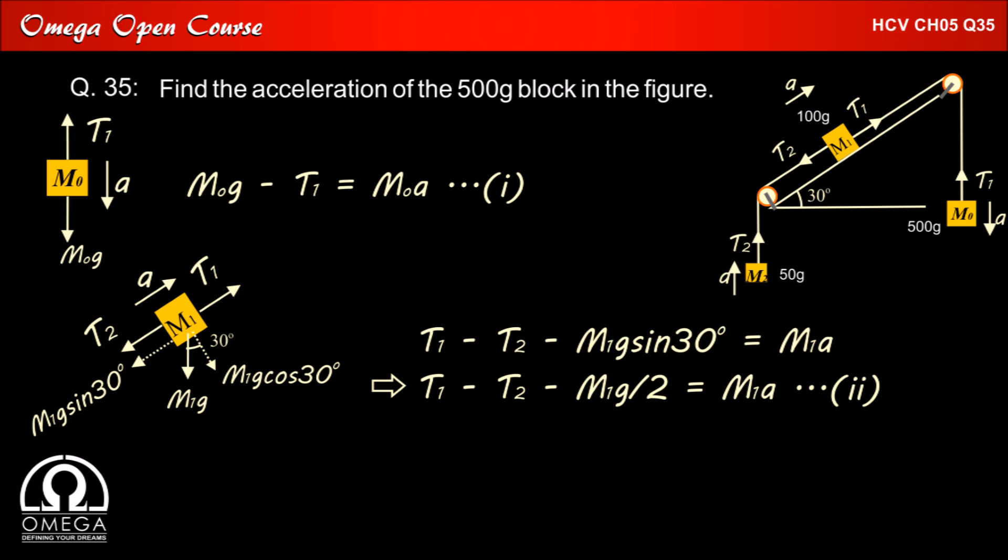Putting the value of sin 30° as 1/2, we get T1 - T2 - M1g/2 = M1a.